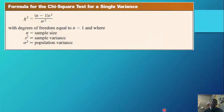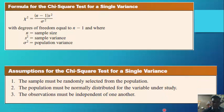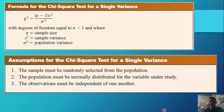The formula for the chi-square test for a single variance is: χ² equals (n minus 1) times s-squared, all over σ². The degrees of freedom equal n minus 1, where n is the sample size, s-squared is the sample variance, and σ² is the population variance. Assumptions: the sample must be randomly selected, the population must be normally distributed, and observations must be independent of one another.